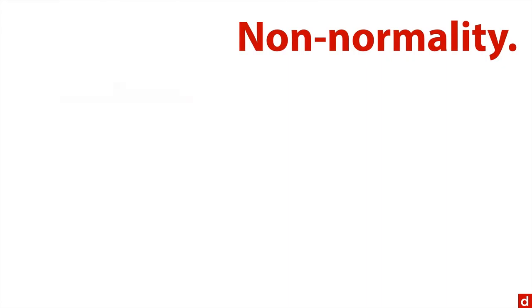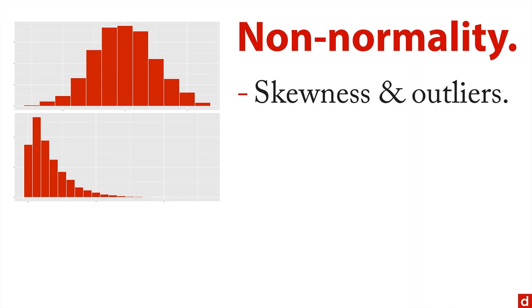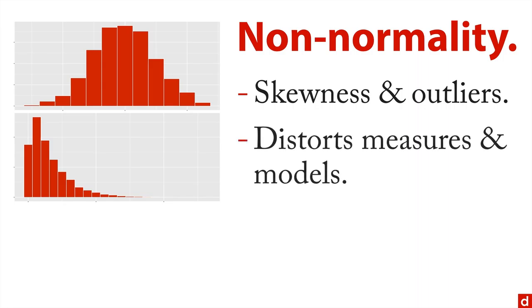Let's begin with non-normality. Most statistical procedures like to deal with nice, symmetrical, unimodal bell curves. They make life really easy. But sometimes you get really skewed distributions or you get outliers. Skewness and outliers happen pretty often. They're a problem because they distort measures like the mean, which gets thrown off tremendously when there are outliers, and they throw off models because they assume the symmetry and the unimodal nature of a normal distribution.